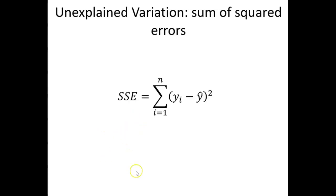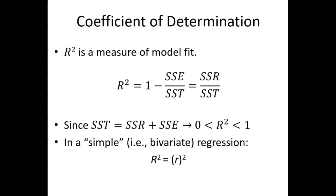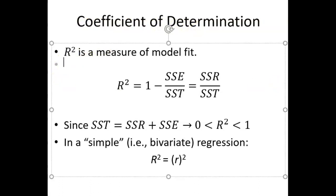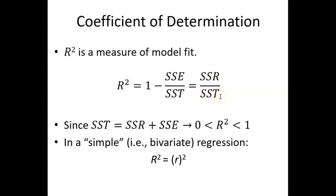With this equation, we can construct what's called the coefficient of determination — a measure of the goodness of fit of a regression model. The coefficient of determination is better known as R-squared, or capital R-squared. R-squared is the ratio of the explained variation, SSR, divided by the total variation. Since the total variation equals SSR plus SSE (explained plus unexplained), a higher R-squared indicates that more of the variation in the dependent variable is being explained by the variation in the independent variable.